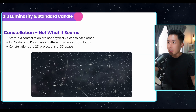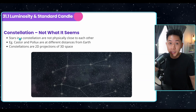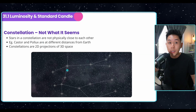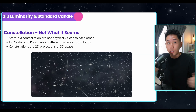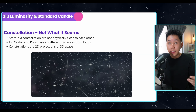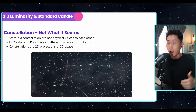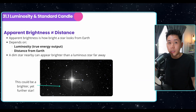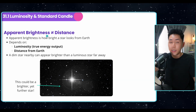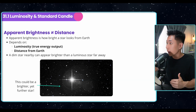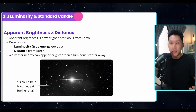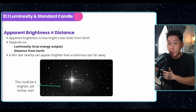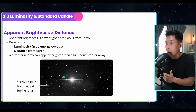First of all, most of you have heard of the term constellation. Just a fun fact: stars in constellations are usually not physically close to each other. Constellations are just 2D projections of 3D space. So apparent brightness doesn't represent distance — if a star is very bright, it doesn't mean it is close to us. It could also be due to their luminosity, which we'll talk about in a bit.